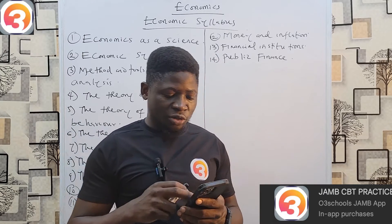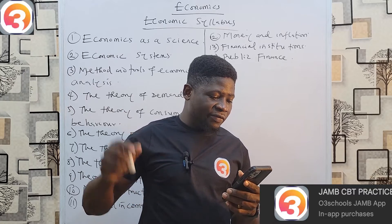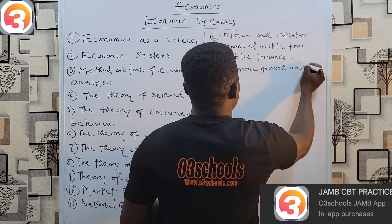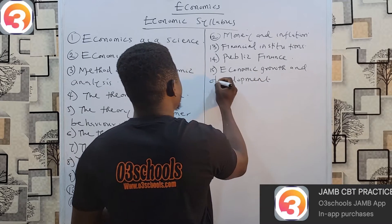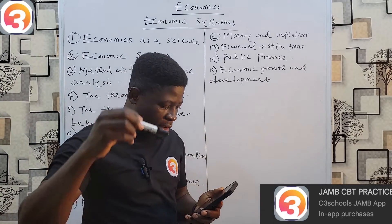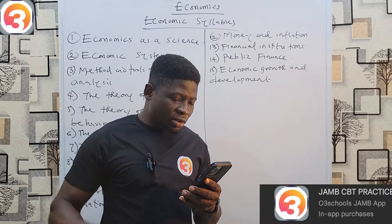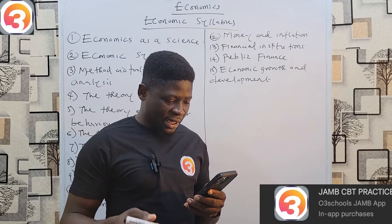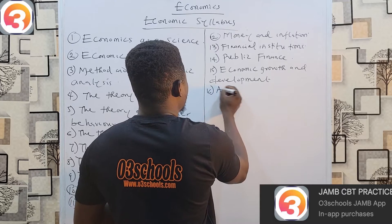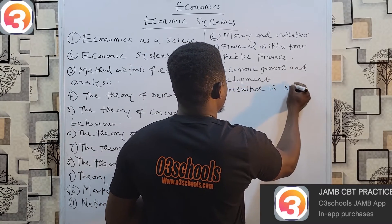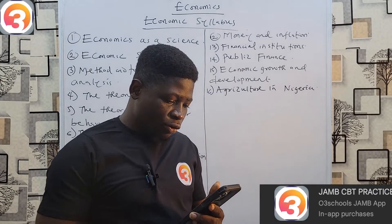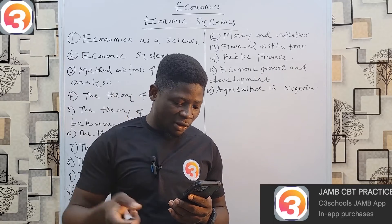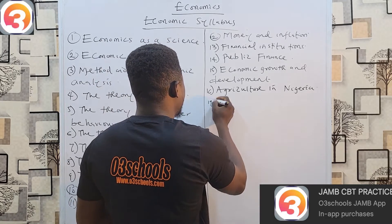Number fifteen is Economic Growth and Development. Under this, look at indicators of growth and development, factors affecting growth and development, problems of development in Nigeria, and development planning in Nigeria. Number sixteen is Agriculture in Nigeria. Under agriculture, look at types and features, the role of agriculture in economic development, problems of agriculture, agricultural policies and their effects, and instability in agricultural incomes.